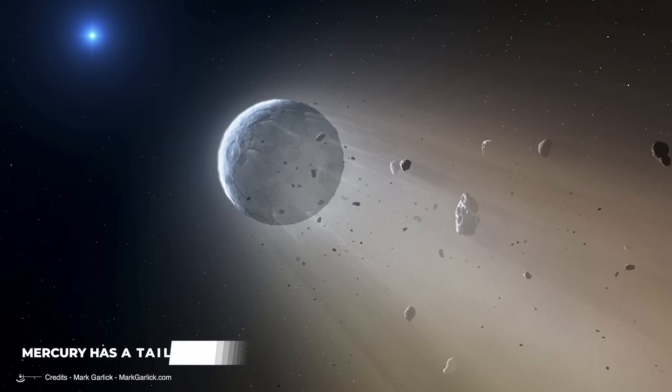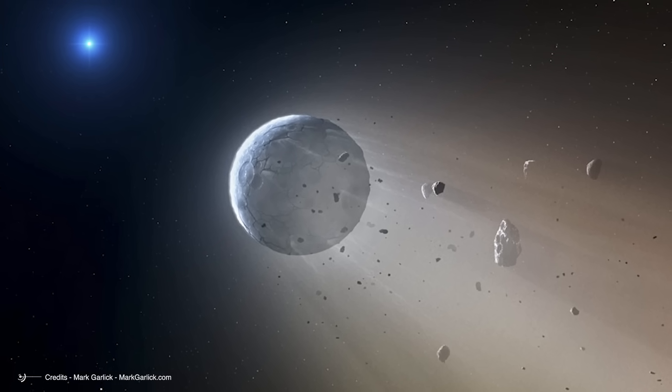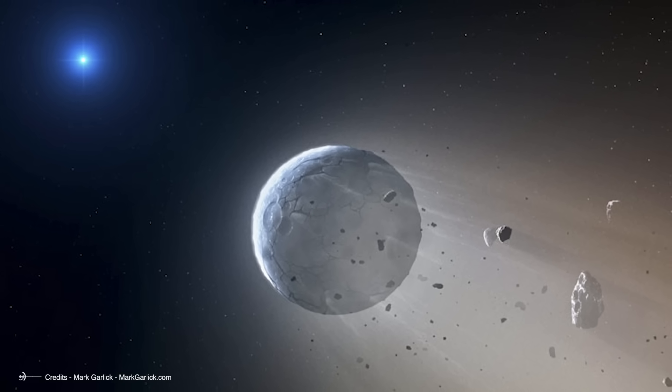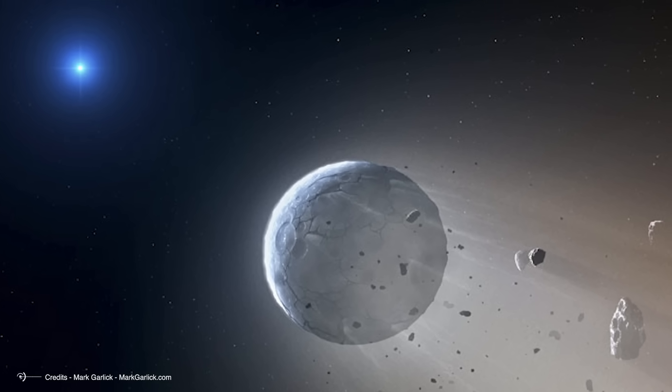Mercury has a tail like a comet. Although it may not seem like it, Mercury, the planet closest to the Sun, leaves behind long, faint trails similar to comets.